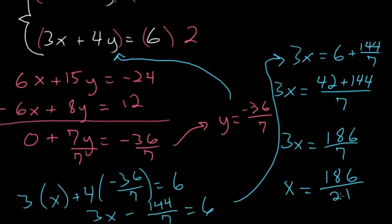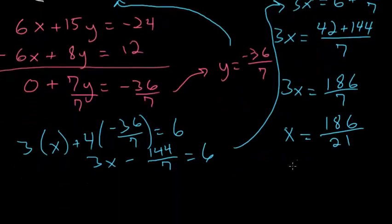186 and 21 are each divisible by 3. So if we divide each number by 3, we're left with 62 divided by 7. And since 7 is prime and does not go into 62 evenly, this is as simple a fraction as we can make it.